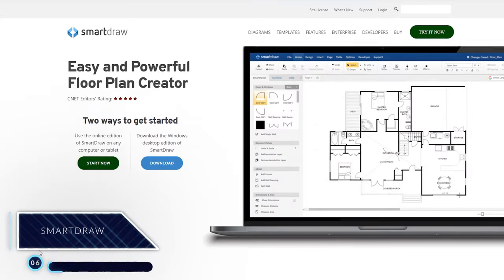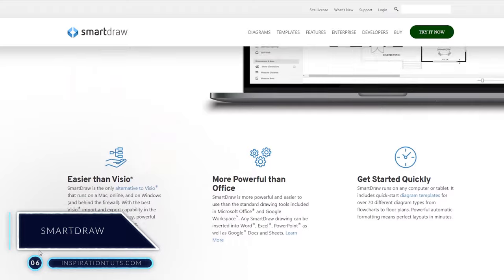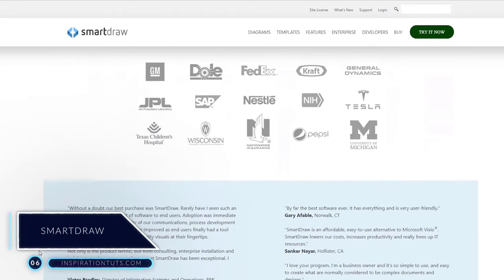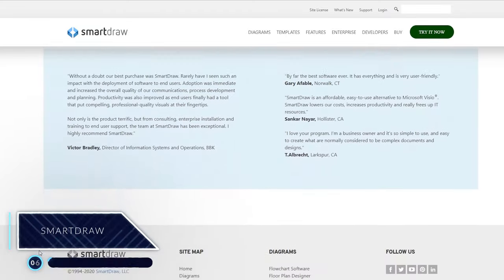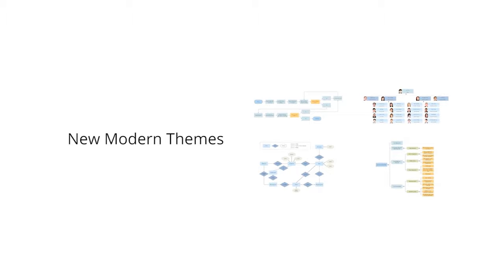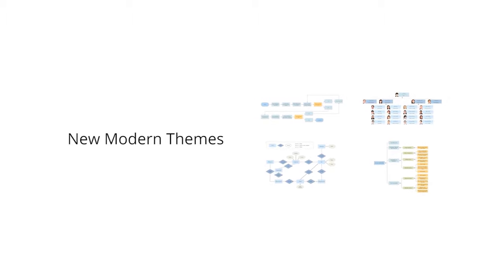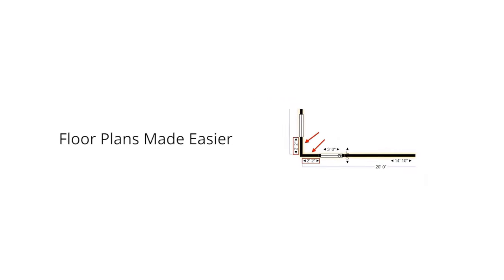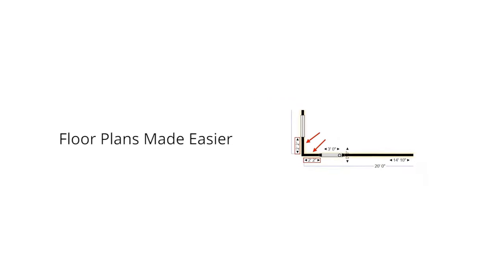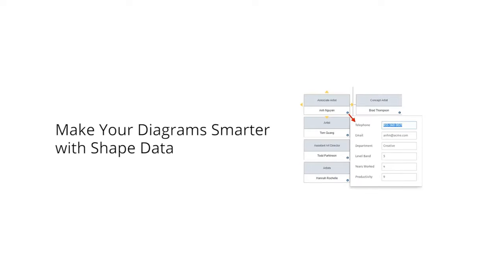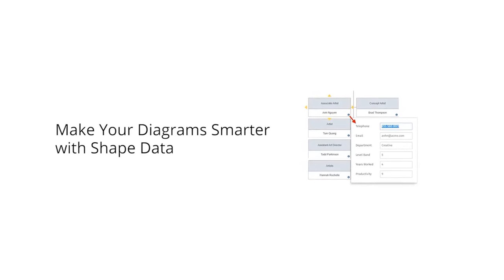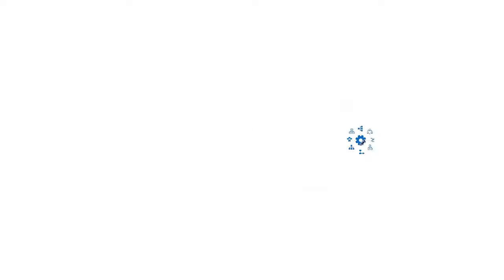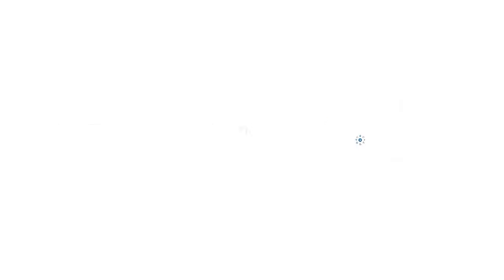Number 6: SmartDraw. This is a great 3D modeling software that can make the modeling process easier for architects. The software offers different editable templates according to project needs, as well as project charts and schedules. In addition, it offers great support documentation like charts, network diagrams and wireframes.